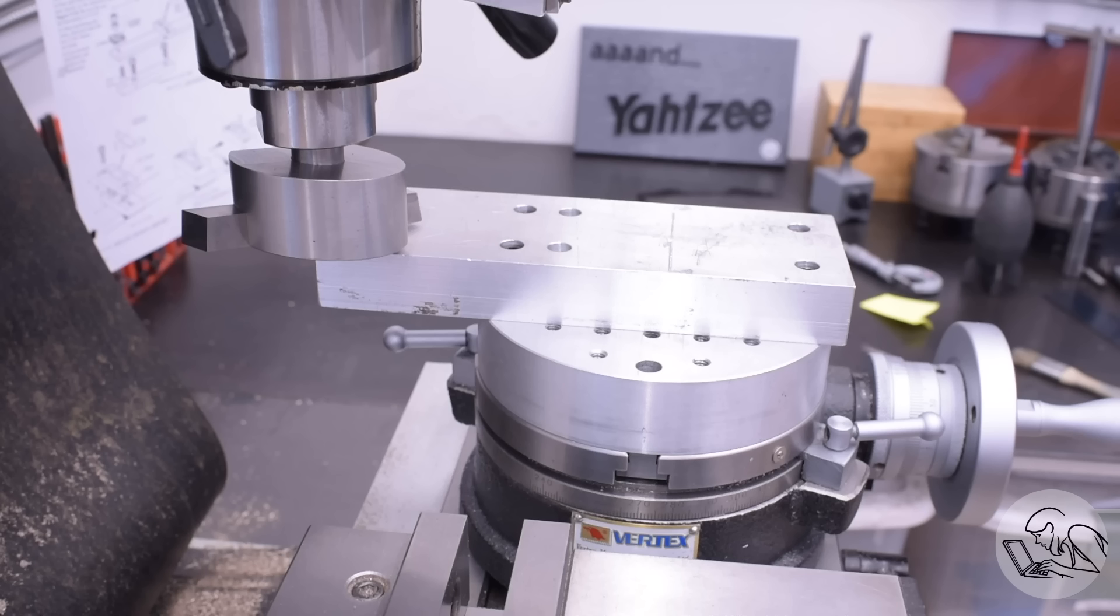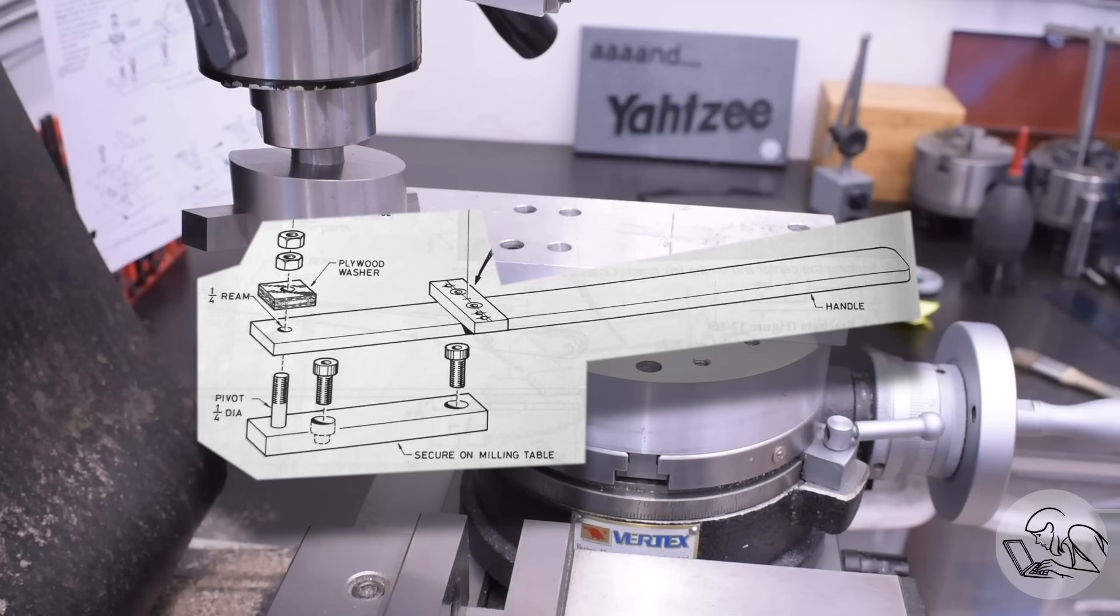Quick sidebar, one of the interesting things about Kozo's book is that he actually does not assume you have a rotary table. And yet, locomotive valve gear has a whole lot of stuff in it, like these link blocks that seemingly require one. So he has, for every similar part, some sort of contraption that you can build to get this done without a rotary table.